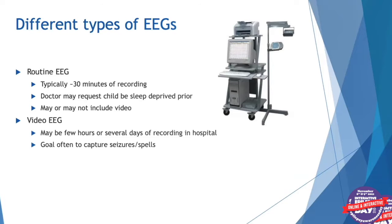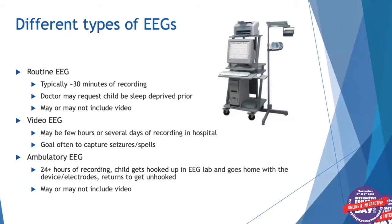A video EEG may be a few hours or can be several days to even weeks of recording that takes place in the hospital. When a video EEG is ordered, the goal is often to capture seizures or spells and get good long-term monitoring of what's going on in the brain. An ambulatory EEG is similar but the child is hooked up in the EEG lab and then goes home with the device — often carried in a backpack — recording for 24 or more hours, returning the next day or several days later to get unhooked. These may or may not include video.